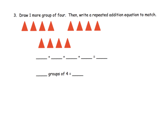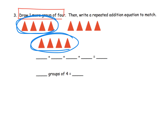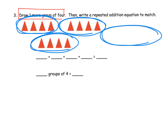Here's more like what I'm talking about. It says: draw one more group of four triangles, and then write the repeated addition. We can see we've got one group of triangles here — I'm going to circle them — another group here, another group here, and we're supposed to draw one more group of triangles. So let's do that: one triangle, two triangles, three triangles, four triangles. There is our one more group of four triangles.